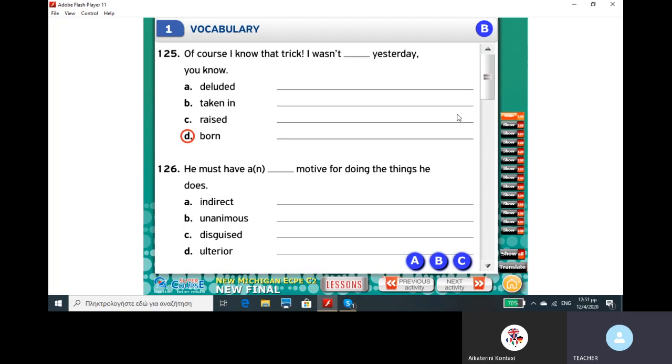He must have a gap motive for doing the things he does. Options: indirect, unanimous, disguised, ulterior.